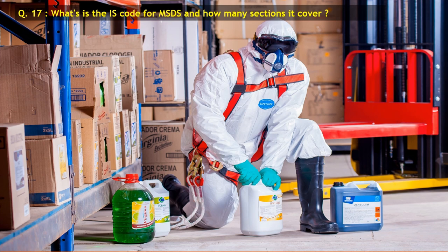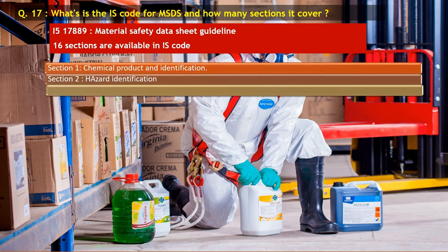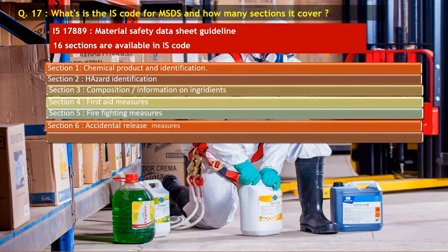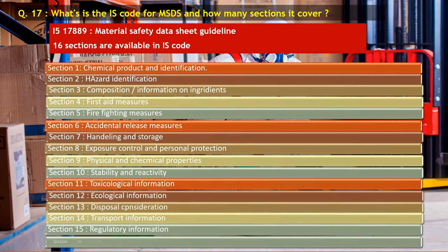Question number 17: What is the IS code for MSDS and how many sections does it cover? The IS code for MSDS is IS-17889 — Material Safety Data Sheet Guideline. It has 16 sections: Section 1 — chemical product and identification; Section 2 — hazard identification; Section 3 — composition information; Section 4 — first aid measures; Section 5 — fire fighting measures; Section 6 — accidental release; Section 7 — handling and storage; Section 8 — exposure control; Section 9 — physical and chemical properties; Section 10 — stability and reactivity; Section 11 — toxicology information; Section 12 — ecological information; Section 13 — disposal considerations; Section 14 — transportation information; Section 15 — regulatory information; Section 16 — other information.